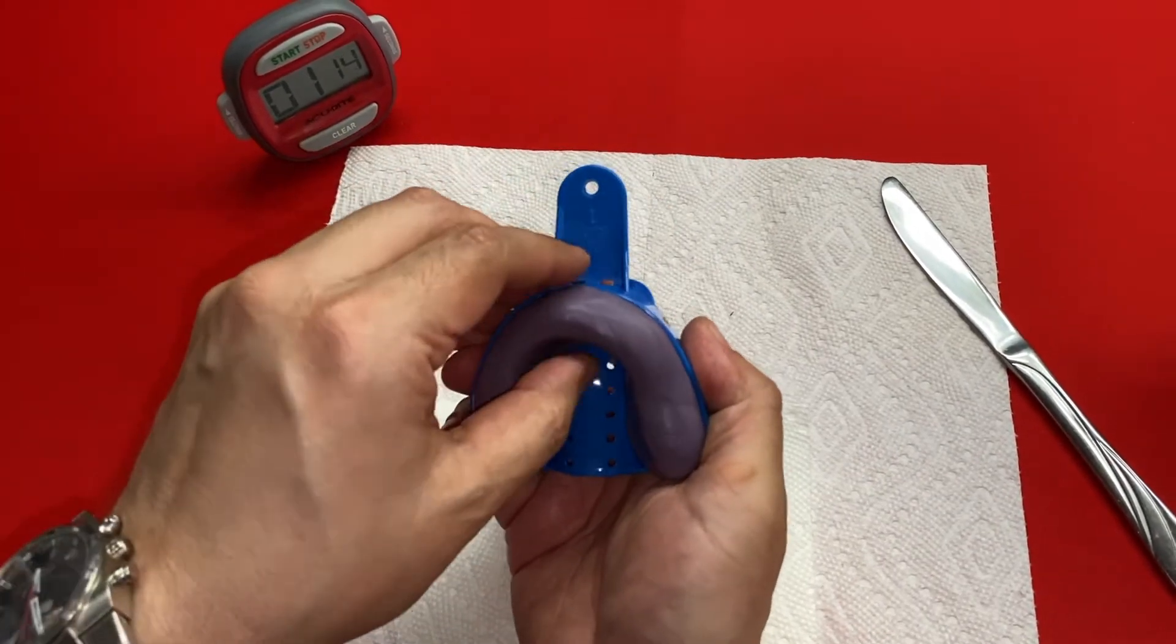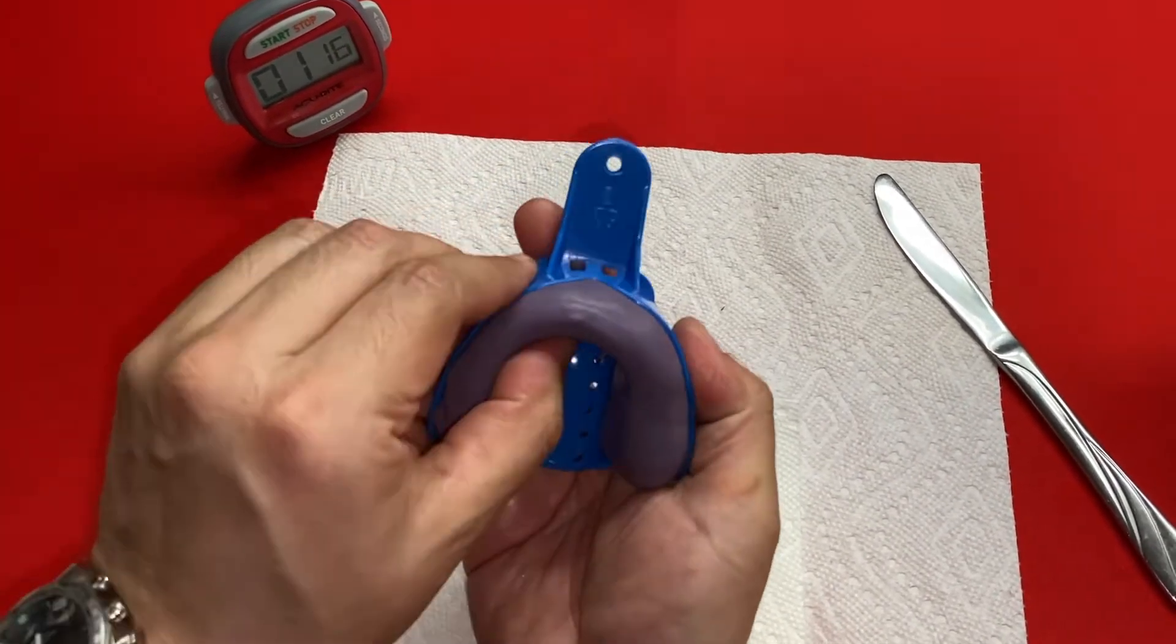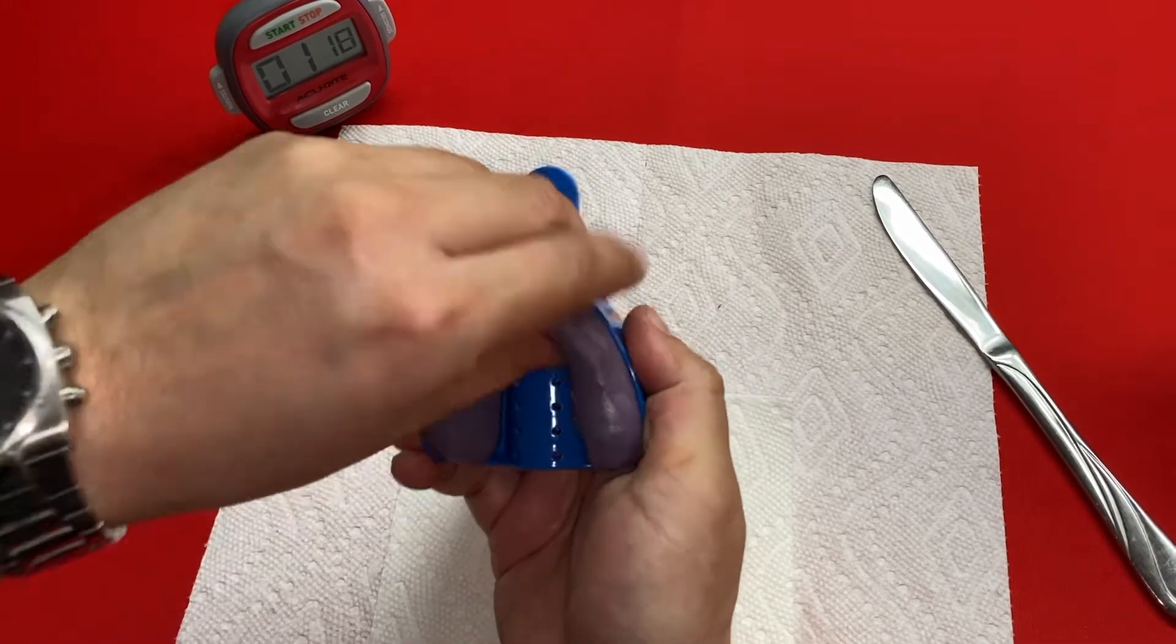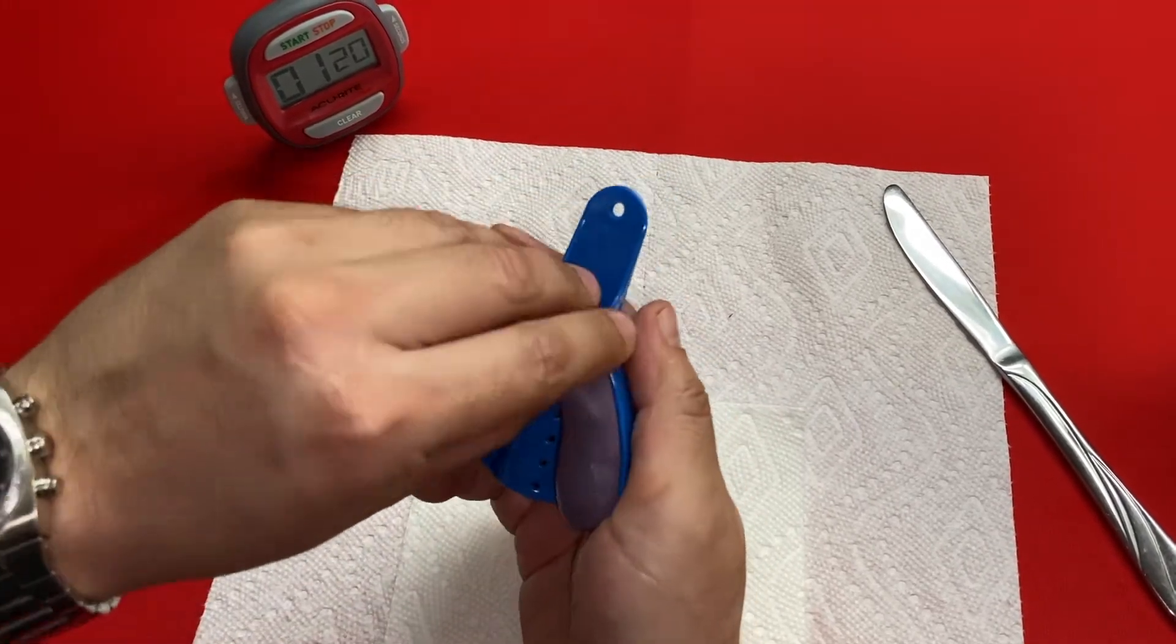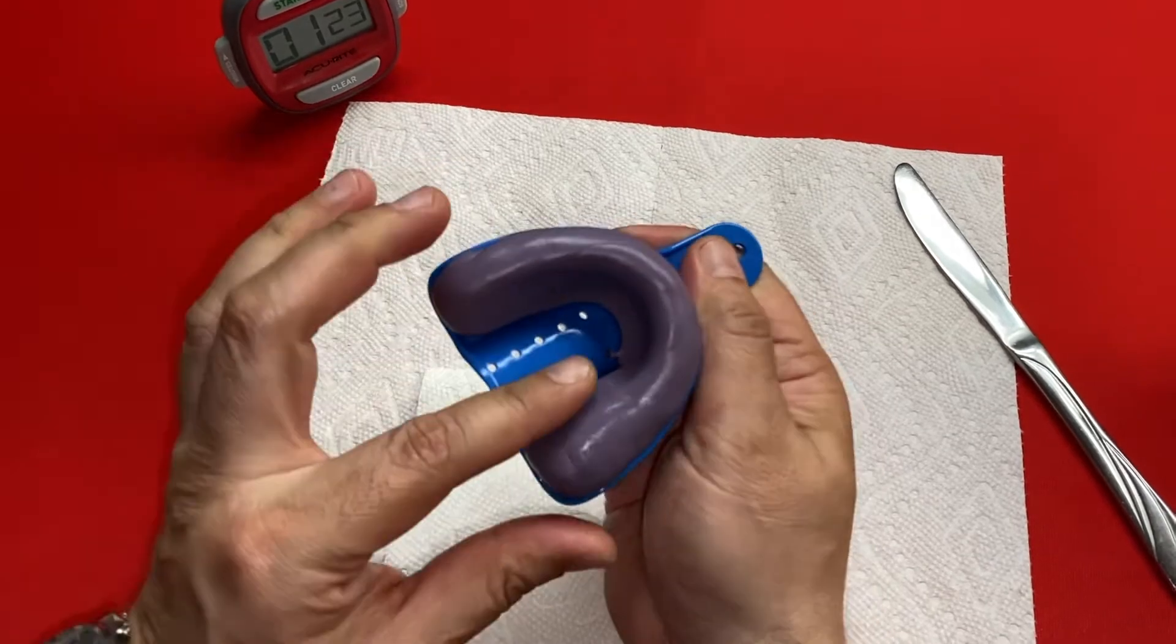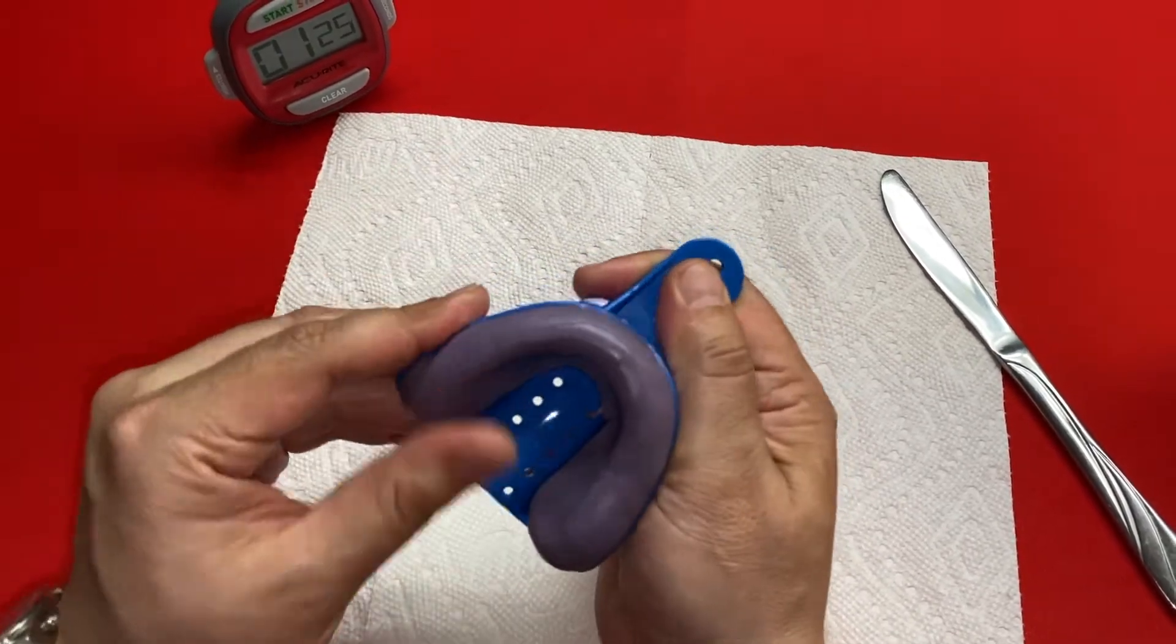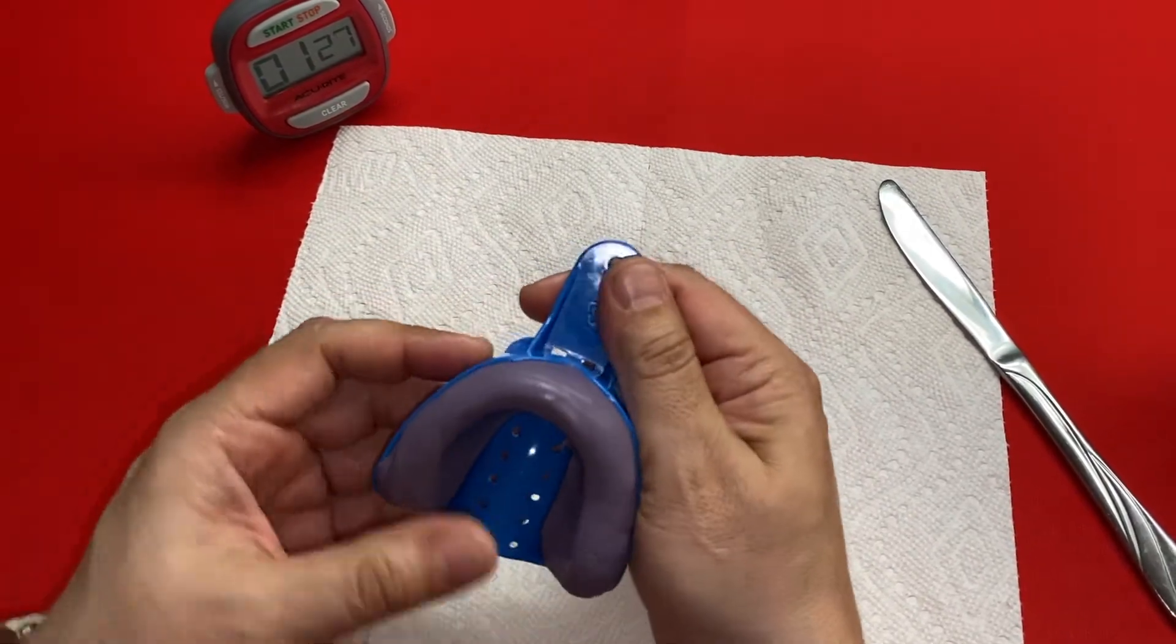Scoop a lot of this putty in the anterior section up and really build that area up, because that's where we need more putty to mold those gums. Then a little bit here on the molars as well.